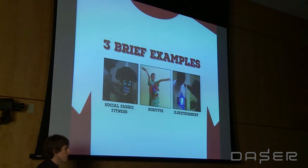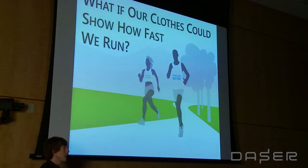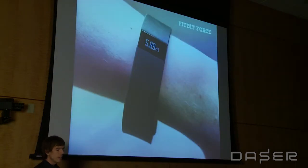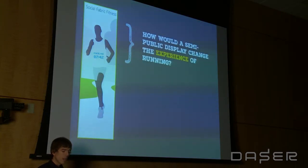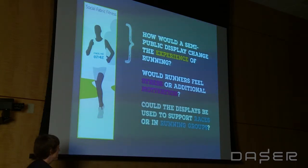Social Fabric Fitness began with the idea: what if our clothes could show how fast we run? Some of you might be familiar with the quantified self movement, with self-tracking via accelerometers or biometric devices — those are oriented more toward the self, displays and data for you. We wanted to flip this and visualize that data in a semi-public way. This leads to interesting questions: how would a semi-public display change the experience of running? Would runners feel stress or additional motivation — Goffman's presentation of self? Does it make one more self-conscious?